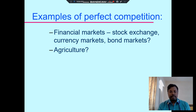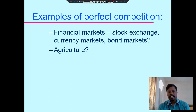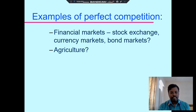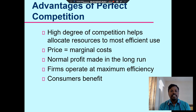Examples of perfect competition markets include financial markets, stock exchanges, currency markets, bonds markets, and agricultural products. These are all examples of perfect competition markets.